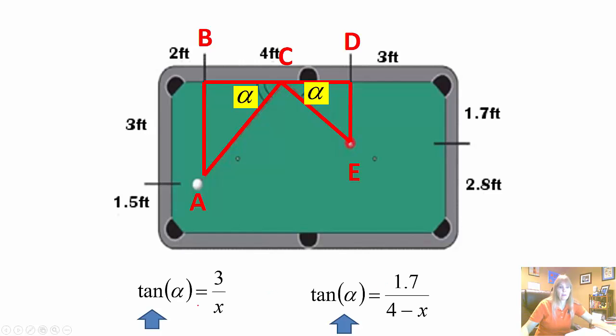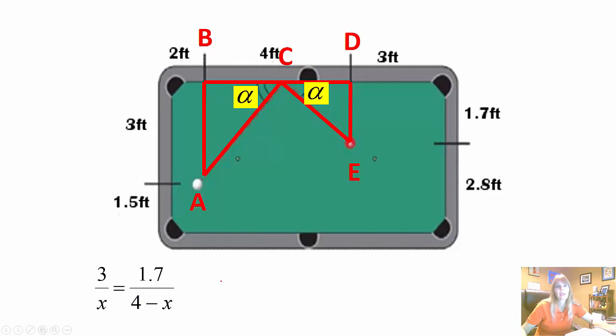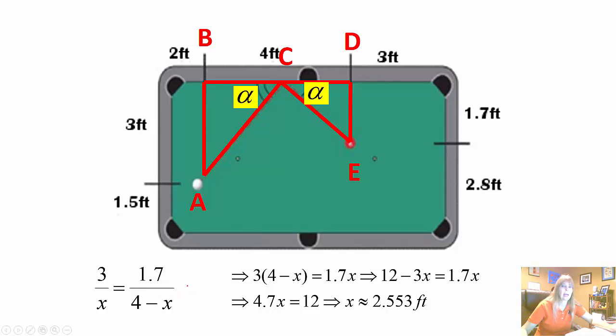And so all I did, I got rid of the tangent, I said 3 over x equal to the 1.7 over 4 minus x. And now I can actually go through and solve this using my wonderful algebra skills that I have acquired throughout the years. So I just cross multiplied here, I distributed the 3, and then I moved the 3x to the 1.7. So 4.7x equals 12 and then divided by this value. Now the only thing is be careful, remember x was this value right here.